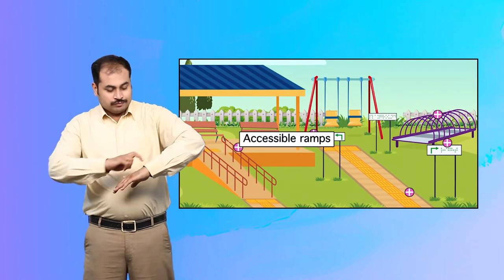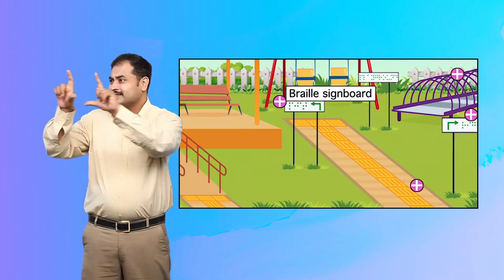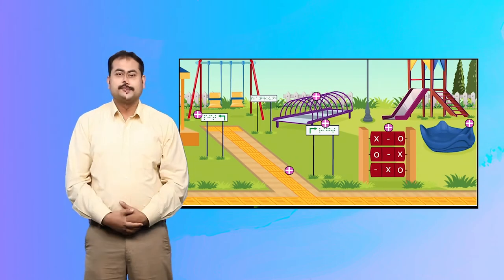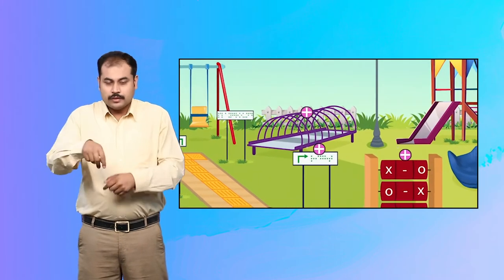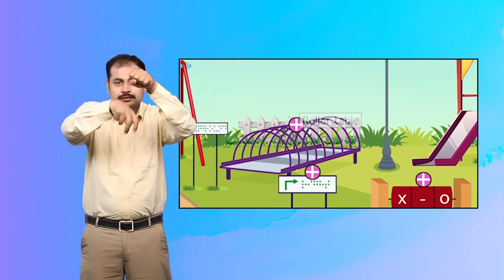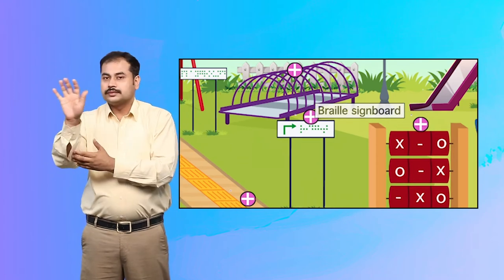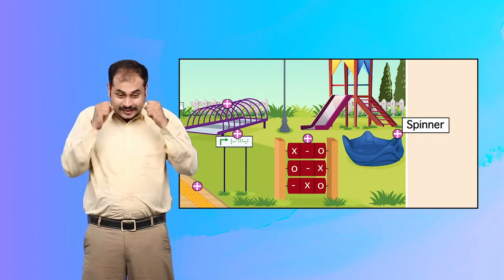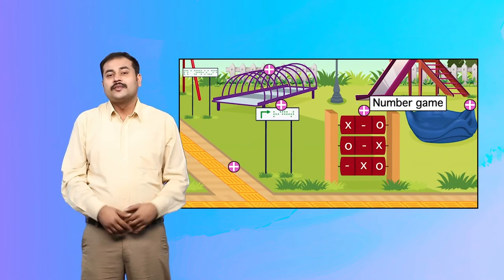The accessibility features shown include: accessible ramps, Braille signboard, tactile path to show the way, roller table, Braille signboard, spinner, and number game.